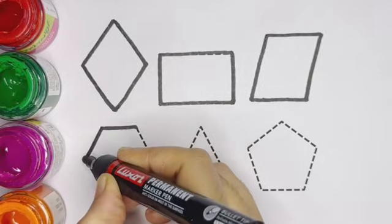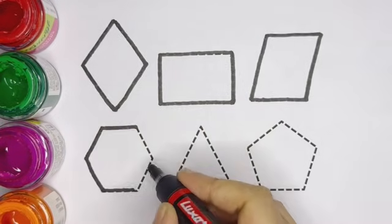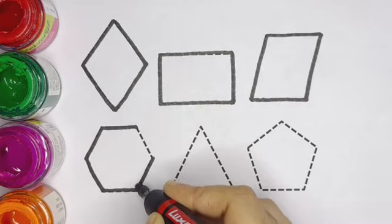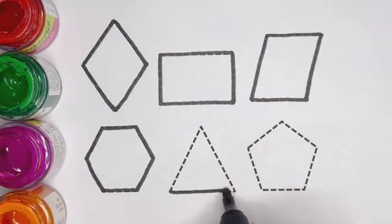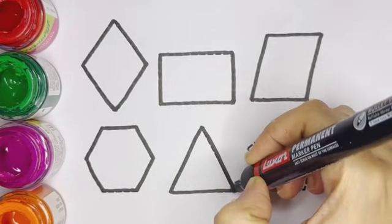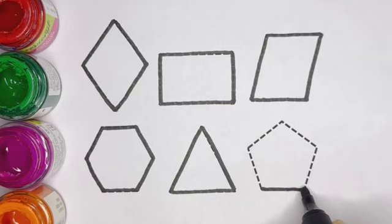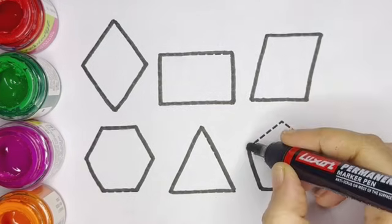Hexagon, hexagon, hexagon. This shape is called hexagon. Triangle. This is triangle. Pentagon. This is pentagon.